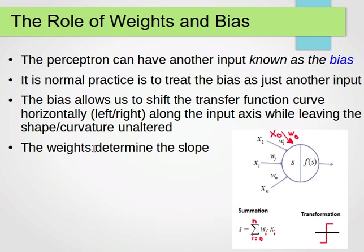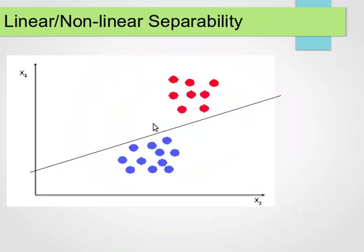The weights now determine the slope of our line. So if we see our line here, the weights determine the slope of the line, and the bias will help us move to the left and to the right so we can find the right line that separates our classes.